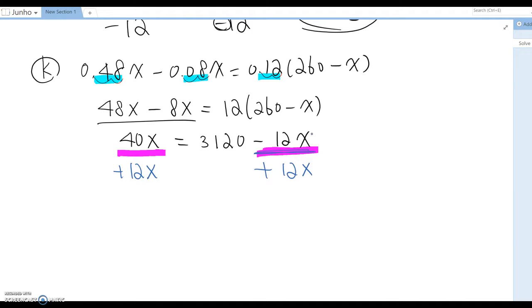Then this becomes 52x equals 3120. And the last part, you divide each term by 52, then x equals 60.